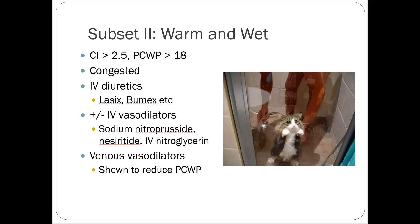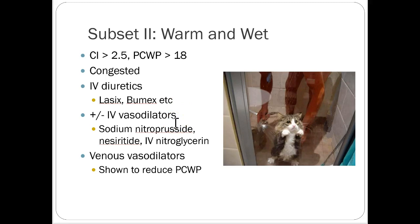Subset two is the warm and wet patient — perfusing fine but fluid overloaded and symptomatic. Primary treatment is IV diuretics: furosemide or bumetanide. All loop diuretics come oral and IV. Bumetanide and torsemide are one-to-one oral to IV, but furosemide is about a two-to-one ratio — 40 mg IV is roughly equivalent to 80 mg oral — because furosemide has variable bioavailability, sometimes as low as 50% absorption from the GI tract.